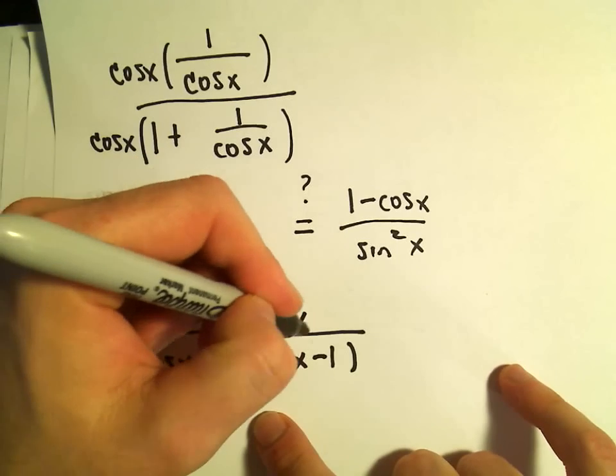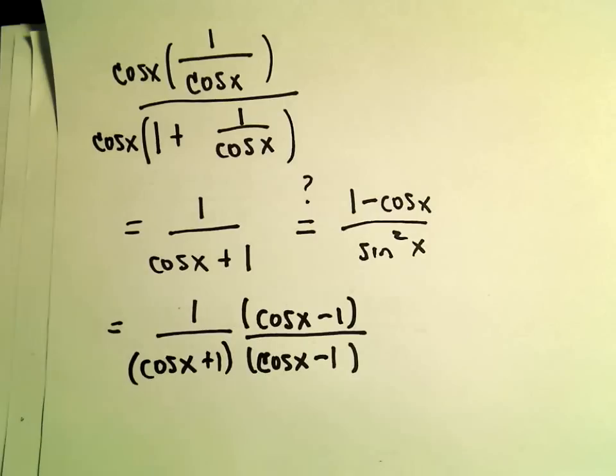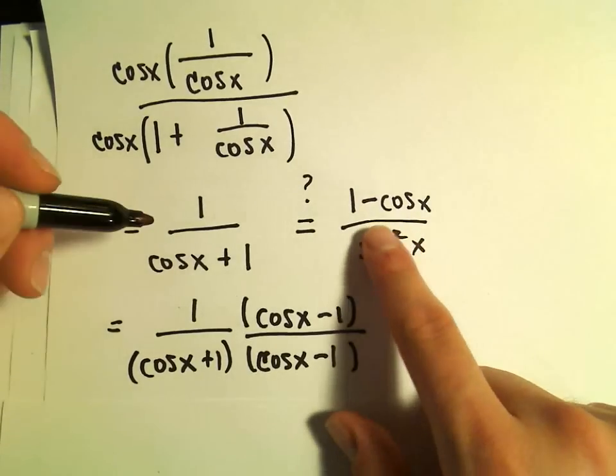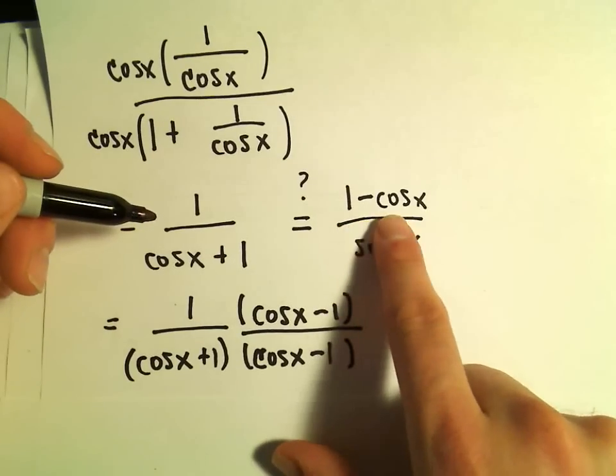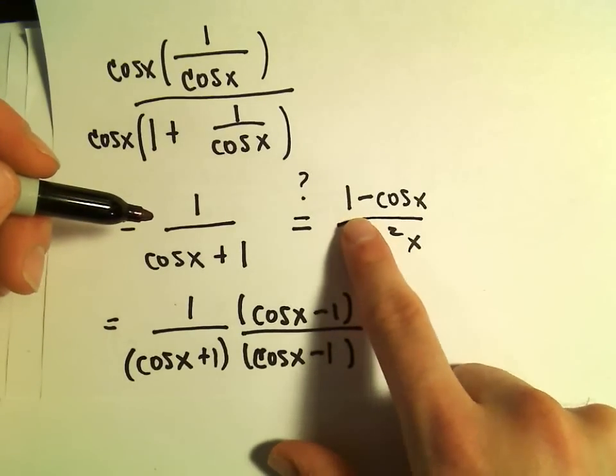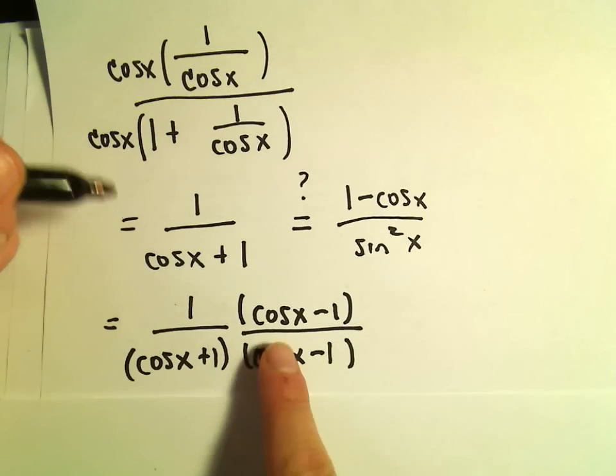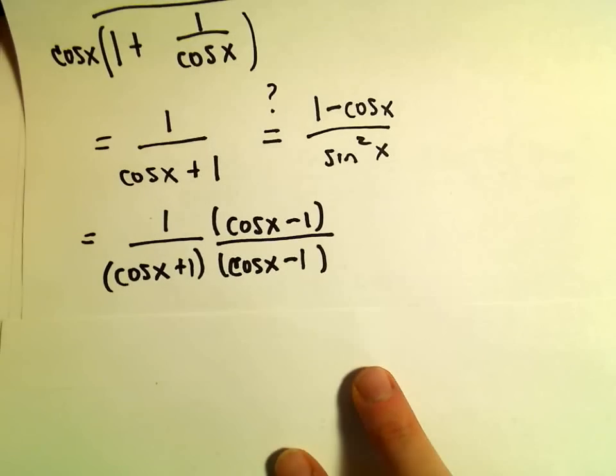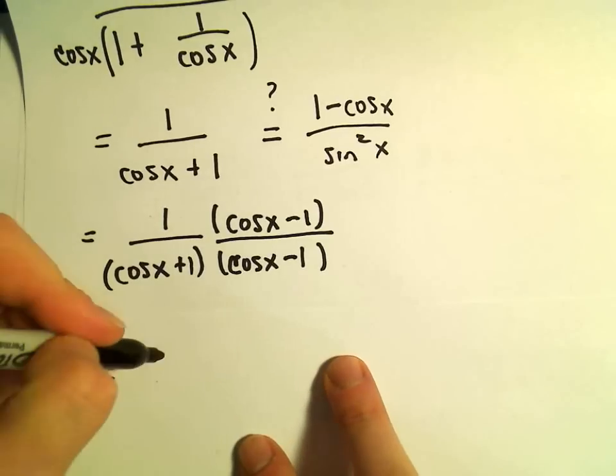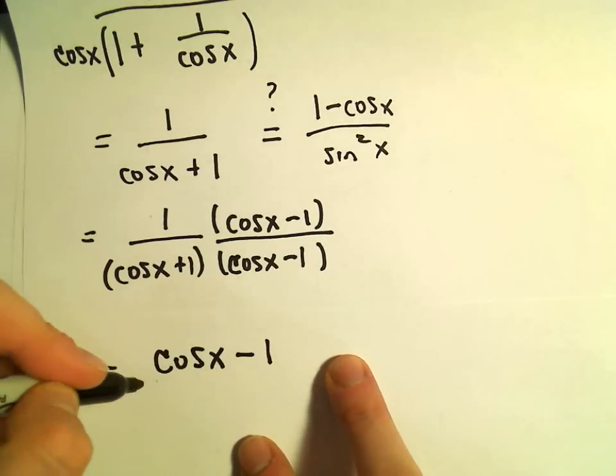The reason why I'm going to do that is, in the numerator, I won't exactly get 1 - cos(x). I'm going to get sort of the opposite sign, but it's close. In the numerator, we'll just have cos(x) - 1, which is pretty close.